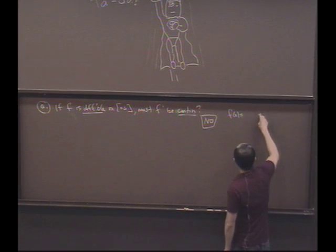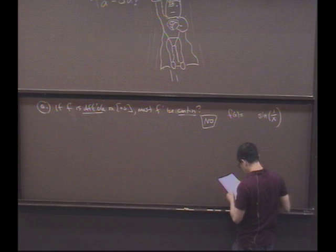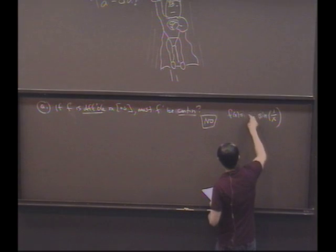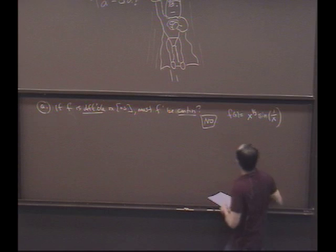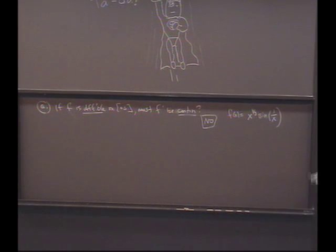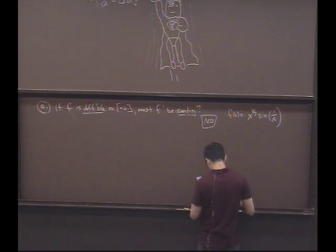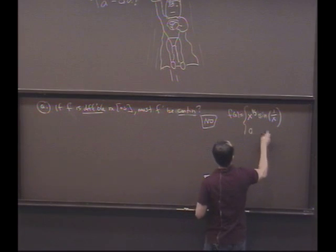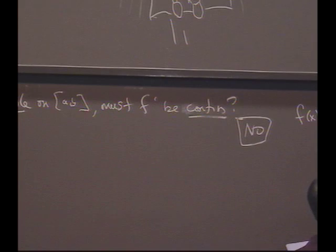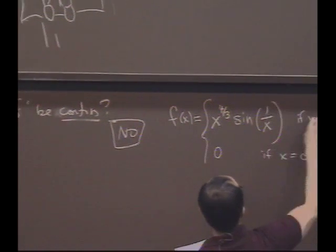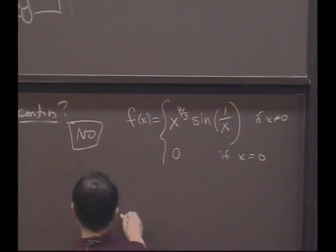How about the topologist sine curve? But let's multiply it by a function that makes it have a different amplitude besides one. The amplitude will be x to the 4 thirds. And let's define it to be zero if x is zero.